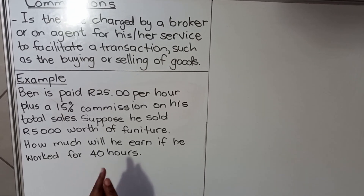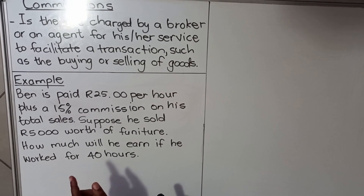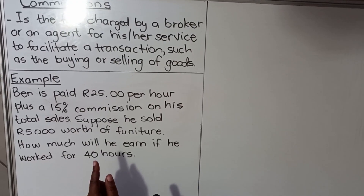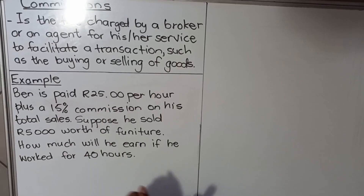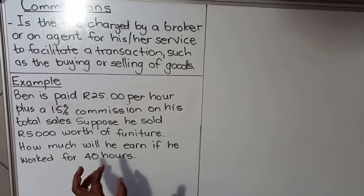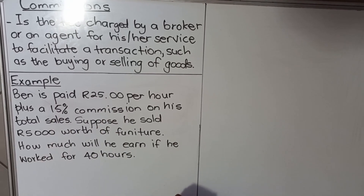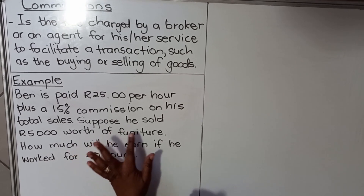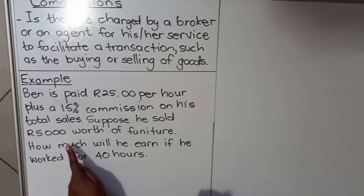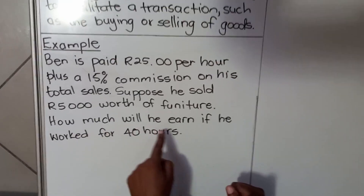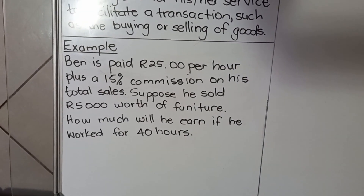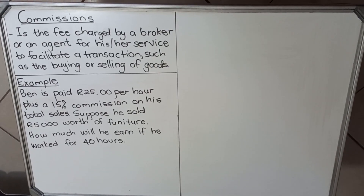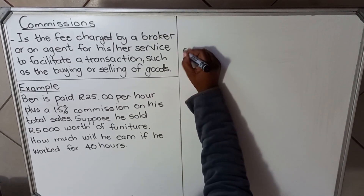Our example says Ben is paid 25 francs per hour plus a 15% commission on his total sales. So for every hour he'll be paid 25 francs, and then 15% of whatever he sells will be paid as commission. They say suppose he sold 5,000 worth of furniture — how much will he earn if he works for 40 hours? Let's calculate that. We want to start by calculating the commission.